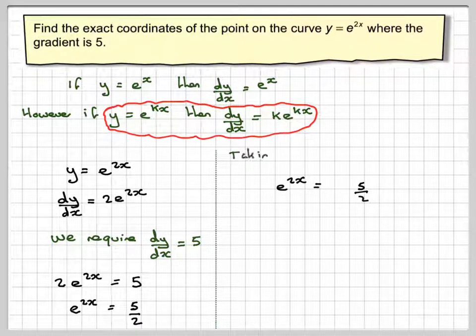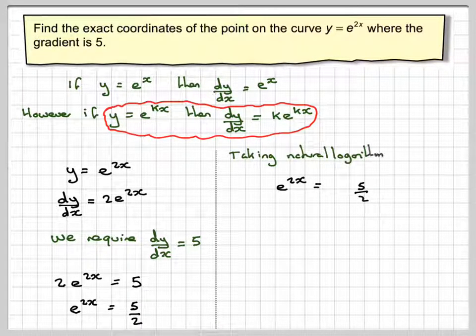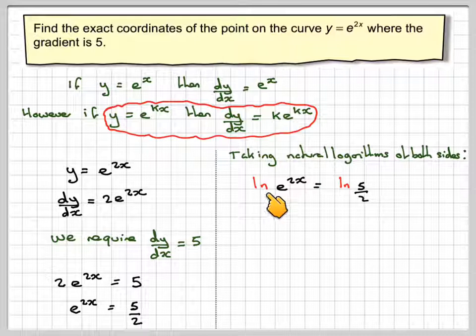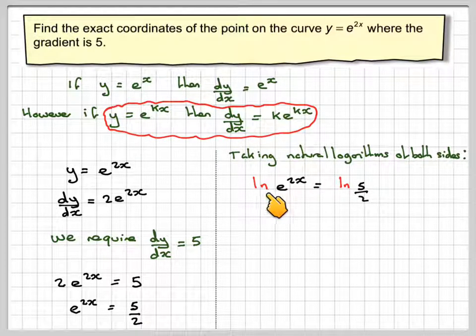Writing that out, if we now take natural logarithms of both sides, that means log to the base e of both sides, which we write as ln on both sides, this means log to the base e.